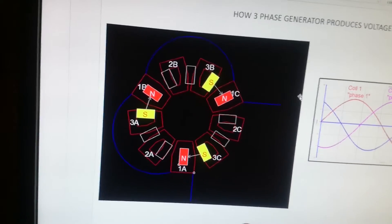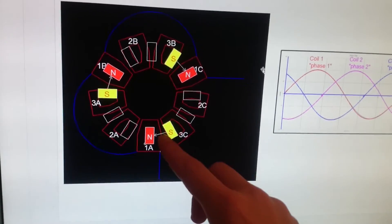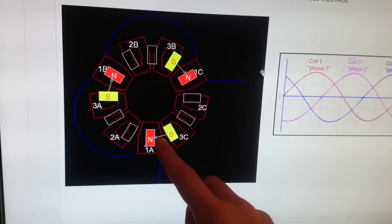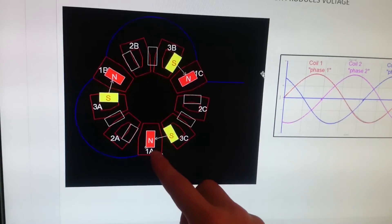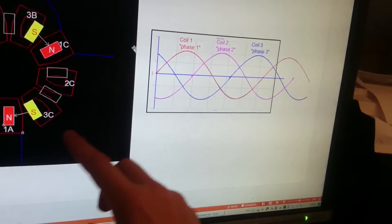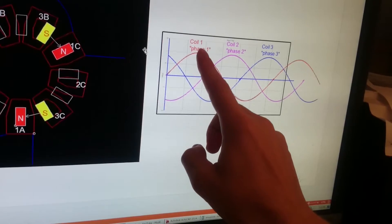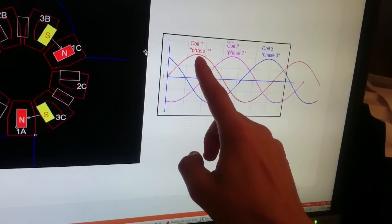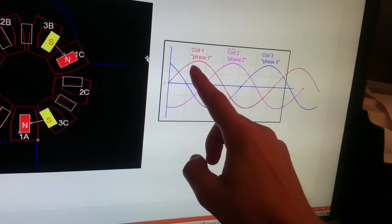When the first magnet flies over the first coil 1A, what voltage do we get? This red represents coil 1—1A, 1B, 1C—which is Phase 1 of the three-phase system.